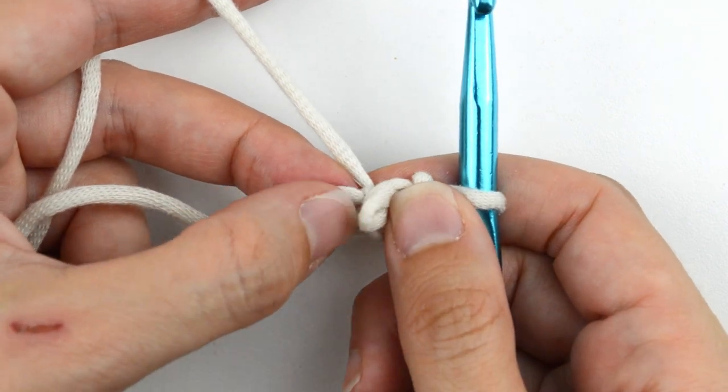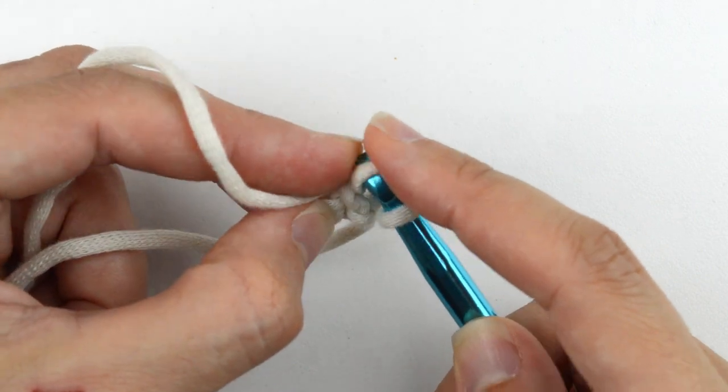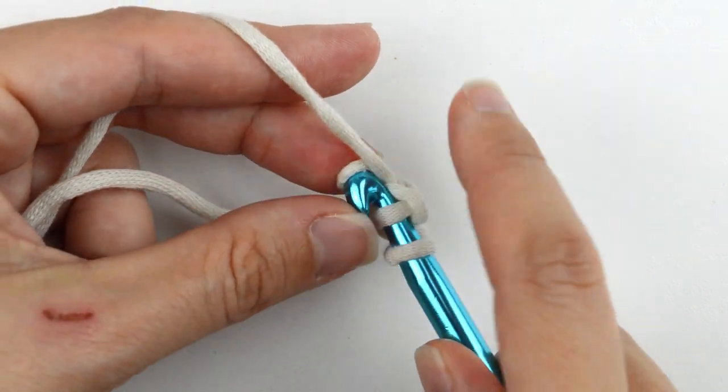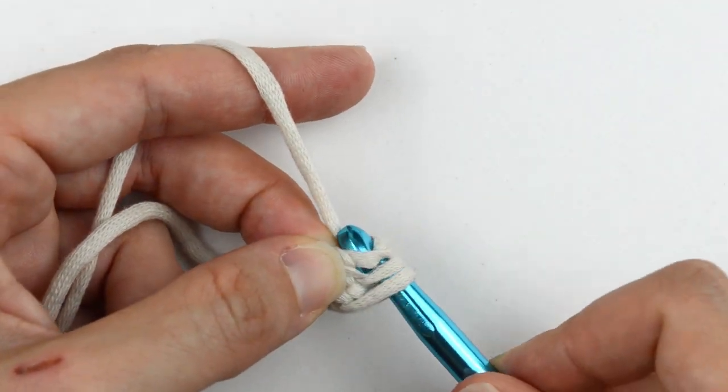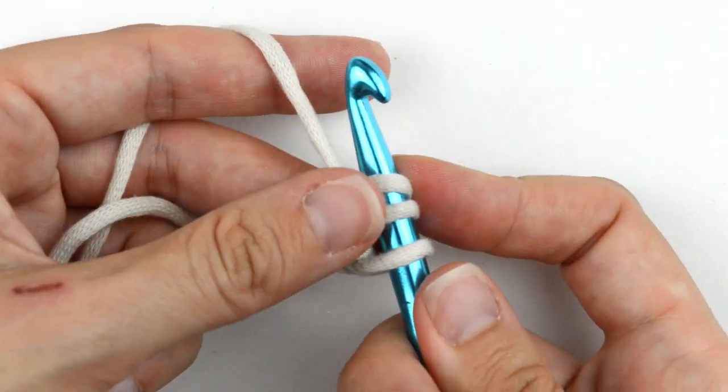Then release the next loop, insert your hook into it, yarn over and pull through. And do the same with your next, in my case last loop. Yarn over and pull through. Now I'm at the end of my row and I've got three loops on my hook again.